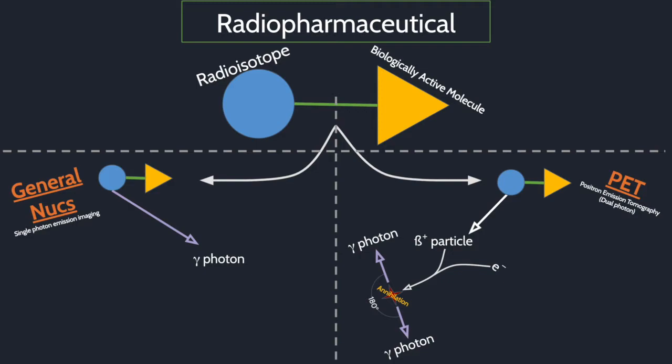For general nukes radiopharmaceuticals, the radioisotope emits gamma rays directly. General nukes can also be called single photon emission imaging because the isotope emits one photon. Remember, gamma rays are just high energy photons. X-rays are also photons but at a lower energy than a gamma ray.